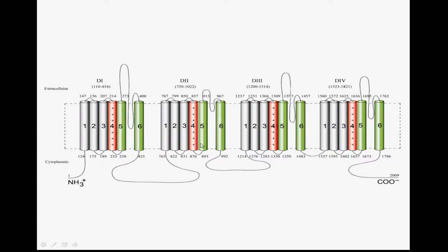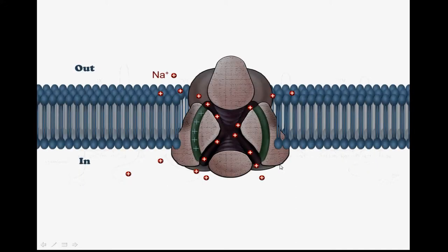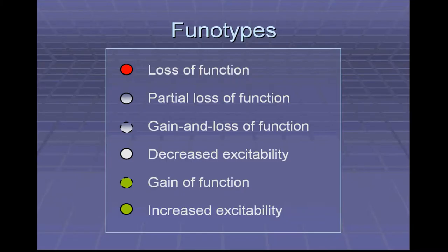The four homologous domains contain voltage sensors and pore-forming regions, which form the alpha subunit of sodium channel 1.1. For analysis, we classified the electrophysiological changes of the channel into six categories: loss of function, partial loss of function, gain and loss of function, decreased flexibility, gain of function, and increased flexibility.